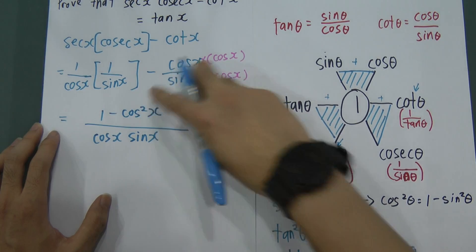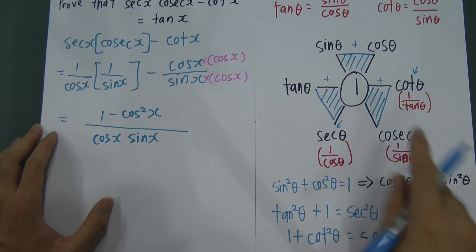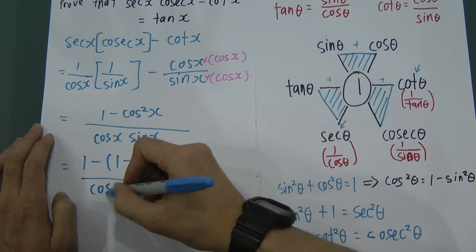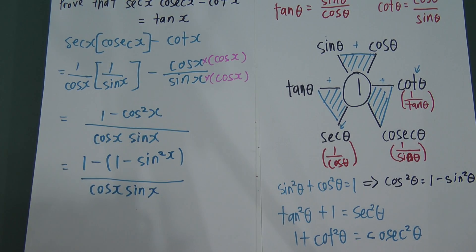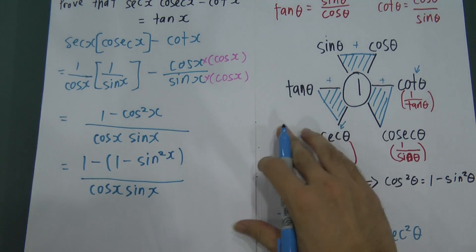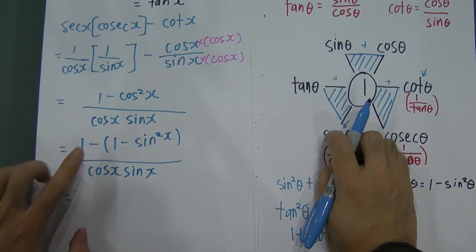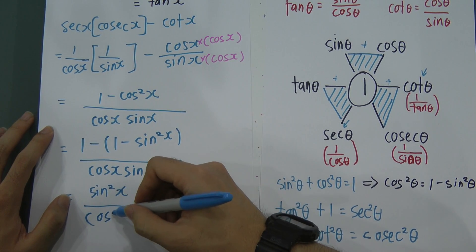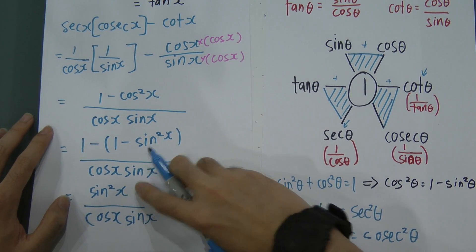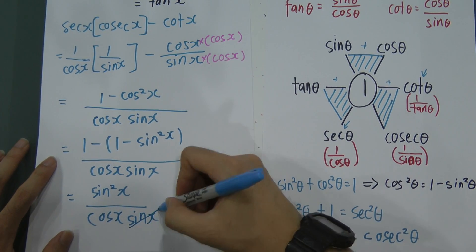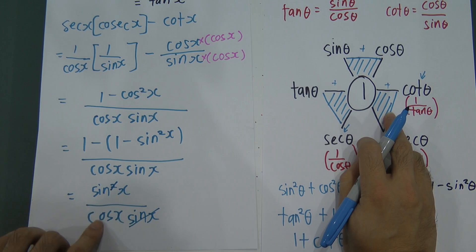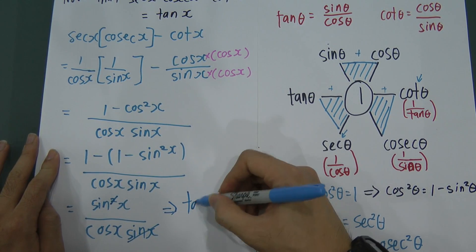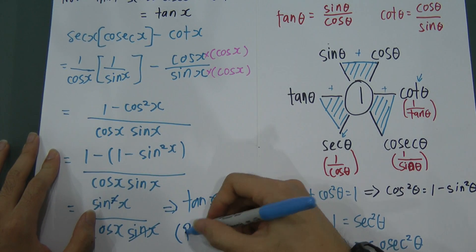So I have: (1 − cos²x) / (cos x · sin x) = sin²x / (cos x · sin x). Since sin²x = sin x · sin x, I can cancel one sin x from numerator and denominator. This leaves sin x / cos x, which by the formula equals tan x. Therefore, proof.